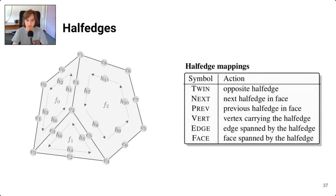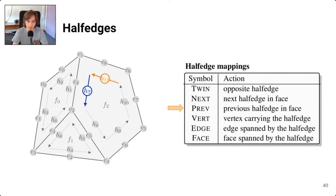Half-edges are a data structure that encodes the connectivity of a mesh. The operators applied to half-edges allow querying adjacency information: the twin operator gives the opposite half-edge; next gives the next half-edge in the face; prev gives the previous half-edge; vert gives the vertex carrying the half-edge; edge gives the edge spanned by the half-edge; and face gives the face containing the half-edge. All of these operators will be useful for filtering.